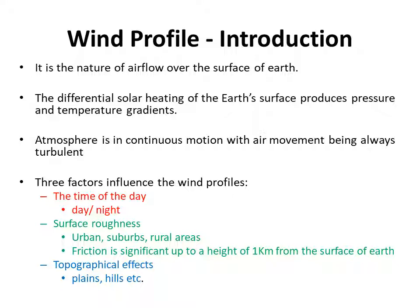There are three factors which influence the wind profile. The first one is the time of the day — that is whether it is daytime or nighttime — which mainly depends upon the radiation received from the sun. The second one is surface roughness, that is whether the area under consideration is an urban area, suburb, or rural area. Surface roughness is significant up to a height of one kilometer from the surface of the earth.